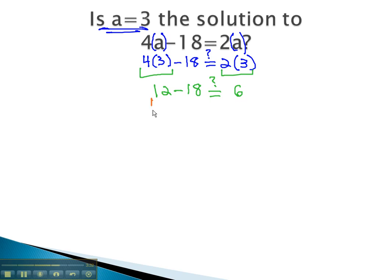Doing the subtraction on the left side by adding the opposite, the negative is bigger. When we subtract 18 - 12, we get 6. So 12 - 18 = -6. Is -6 equal to 6? No, it's not. Because they are not equal, we say no. a = 3 is not the solution to this equation. If we replace the variable with 3, it did not make a true equation. -6 is not the same as positive 6.